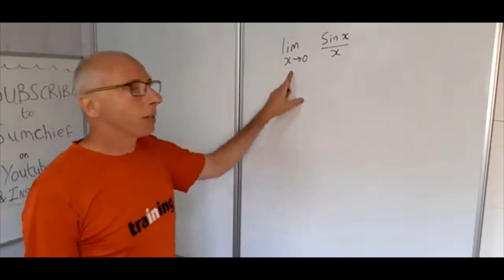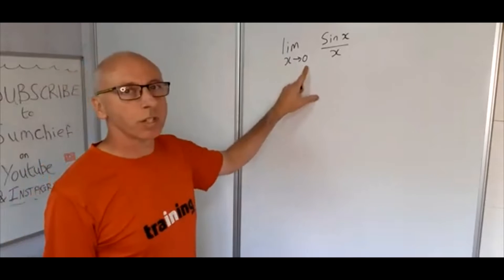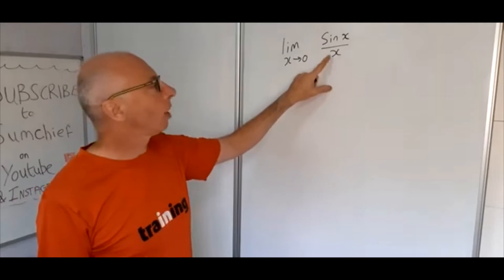So we've got a question here, find the limit as x approaches zero of this function here, sine of x over x.